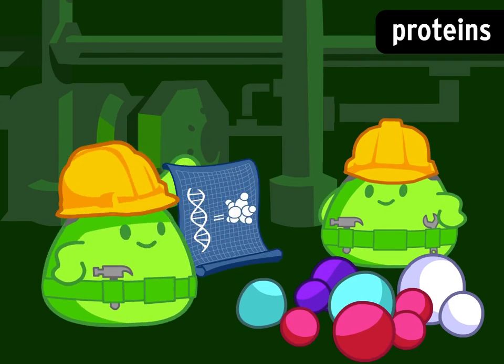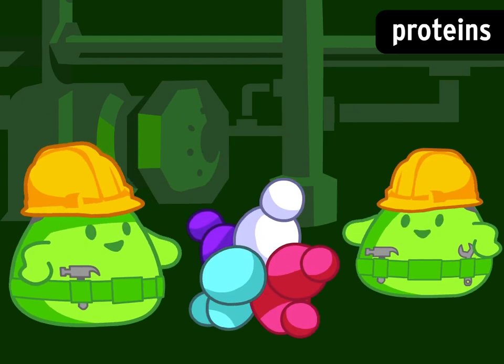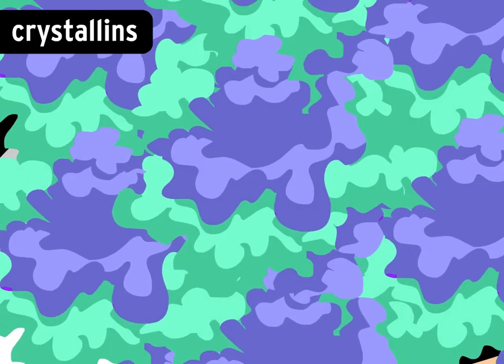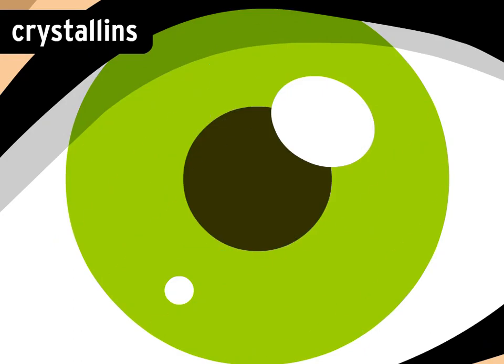DNA tells your cells which proteins to build and how to build them. It tells cells in your eyes to form out of crystallins. These transparent proteins let light shine through so you can see.